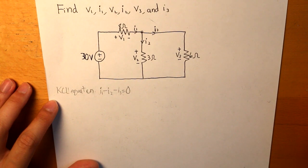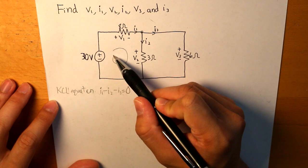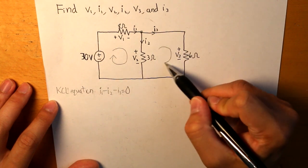So our KCL equation would essentially equal to I1 minus I2 minus I3 is equal to 0. Now let's apply KVL. And we're going to have two loops, one right here, and then another one right here.